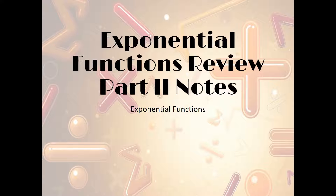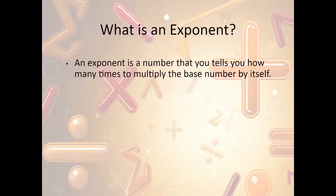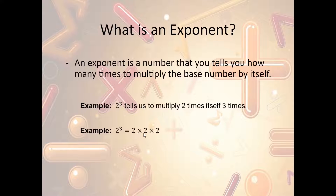Let's take a look now at the Exponential Functions Review Part 2 notes. What is an exponent? An exponent is a number that tells you how many times to multiply the base number by itself. So for instance, we have 2 to the third power. 2 is our base number, and it tells us that we're going to multiply 2 times itself 3 times. So that's really 2 times 2 times 2, which is 8.